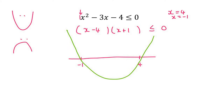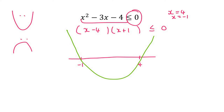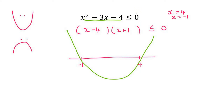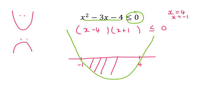Now we look at this part here, and it's telling us where is this graph negative, or smaller than 0. Remember, smaller than 0 means negative — so it means where is the graph underneath the x-axis. Underneath the x-axis is all of this region here.